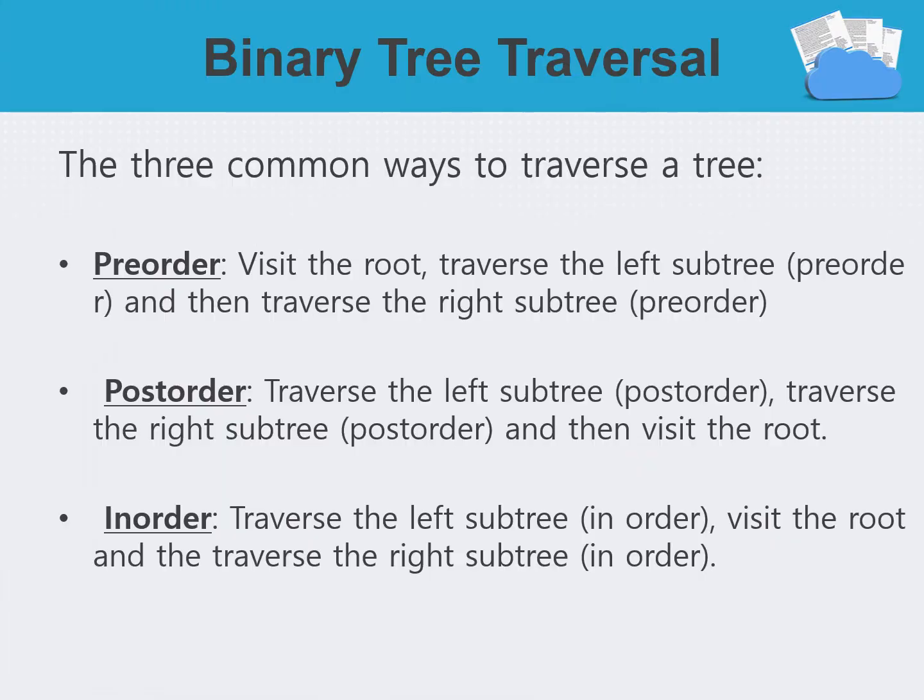We will focus on three main types of traversal: pre-order, post-order, and in-order. In pre-order, we visit the root first, then traverse the left subtree recursively, then the right subtree. In post-order, traversal starts from the left subtree, then the right subtree, and finally visits the root node. In in-order, we traverse the left subtree first, then visit the root, and then traverse the right subtree recursively.